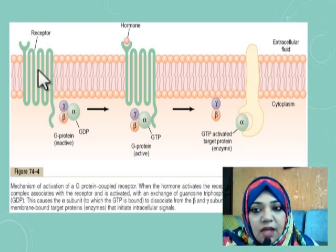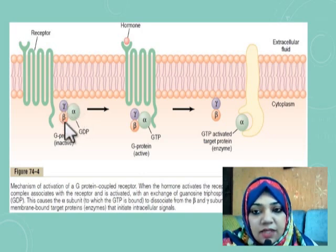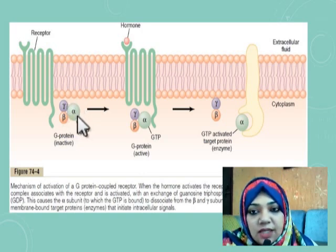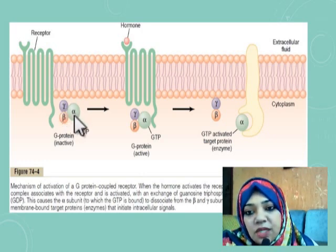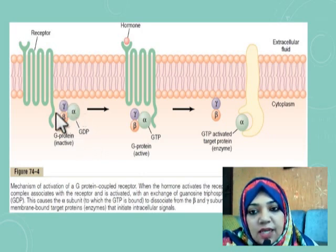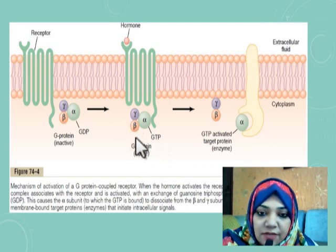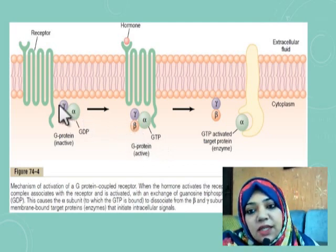The next structure is the G protein. G protein is a membrane-bound complex structure attached to the cell membrane. It has three subunits: the alpha subunit, the beta subunit, and the gamma subunit. The alpha subunit is attached with GDP — guanosine diphosphate — and when the alpha subunit is attached to GDP it is the inactive state. When the alpha subunit binds with GTP, that is the active state.